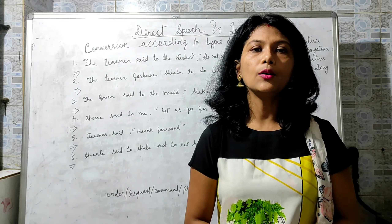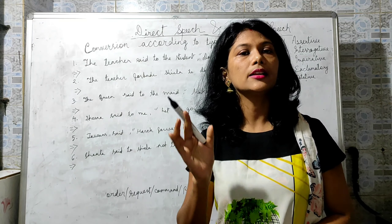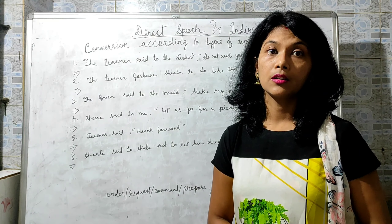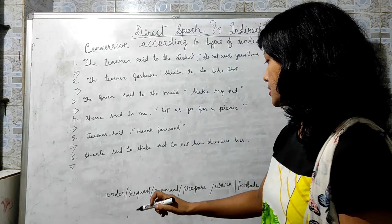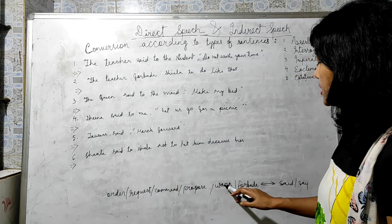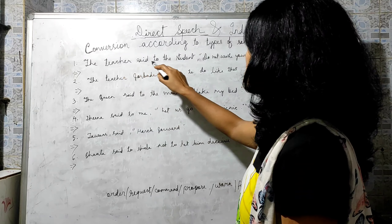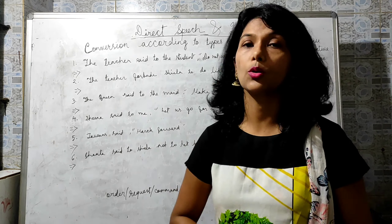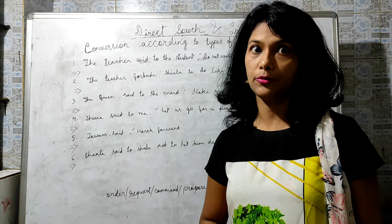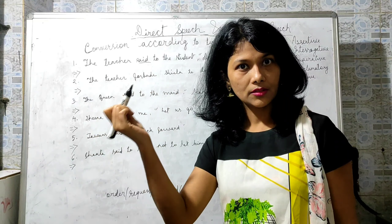For imperative sentences — converting direct to indirect — since imperative sentences suggest order, request, command, proposal, advice, warning, or forbidding, in place of 'say' we use words like order, request, command, propose, warn, forbid, etc. Example: 'The teacher said to the student, do not waste your time' — this is advice, so you write 'The teacher advised the students not to waste their time.'